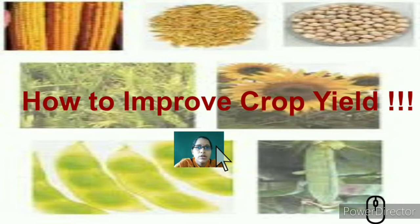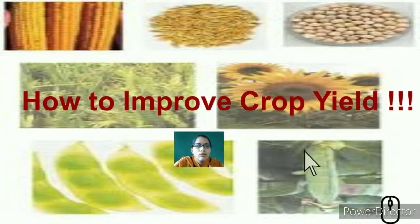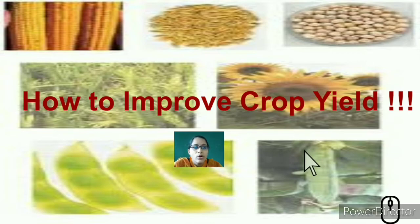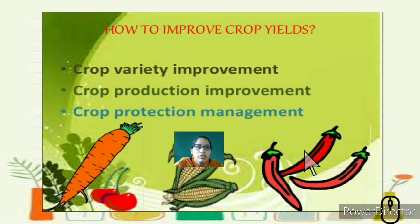Now let's look at how we can improve the crop yield. Crop improvement can be achieved by: improving the variety of the crop, crop production improvement in large quantities, and protecting crops against climatic changes and infections by insects, pests, and mites.